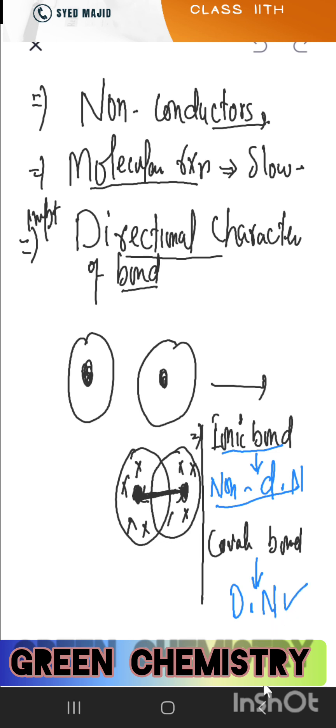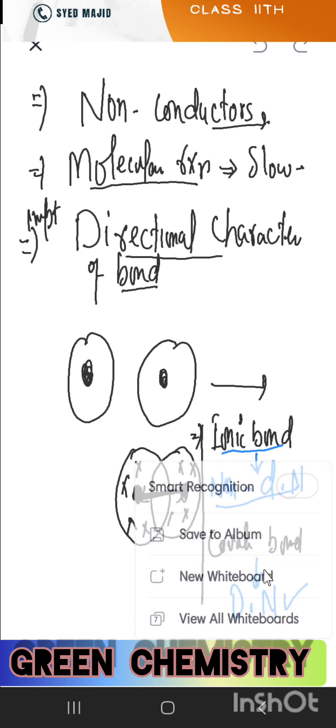To summarize what we have covered: we studied ionic bonds and covalent bonds and their properties in detail. We learned that atoms combine in order to complete their octets or duplets, either by transfer of electrons (forming ionic bonds/ionic compounds) or by sharing electrons (forming covalent bonds/covalent compounds). Now we move to discuss the octet rule.